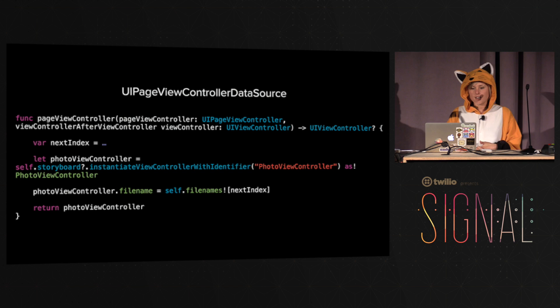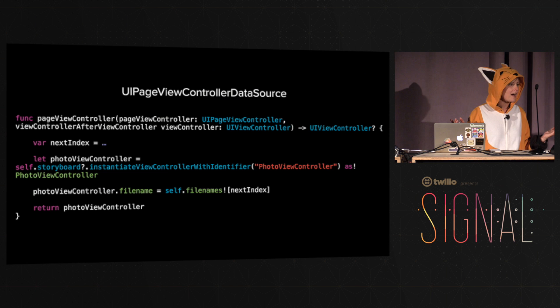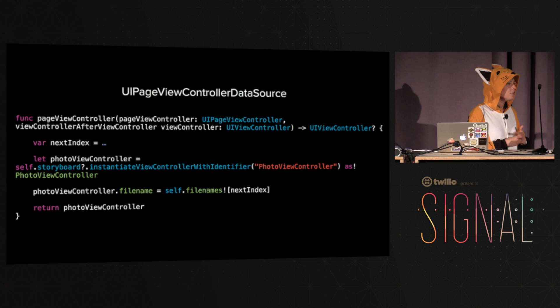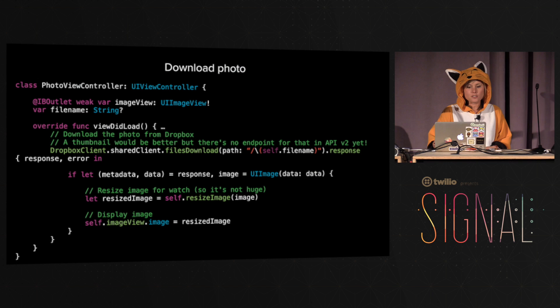The data source also has functions to display the next and previous view controller. What I do is identify which file should be there according to the index, then instantiate a new view controller for that page and set its file name property. I'm not doing any loading of the file until we actually view the photo view controller itself.